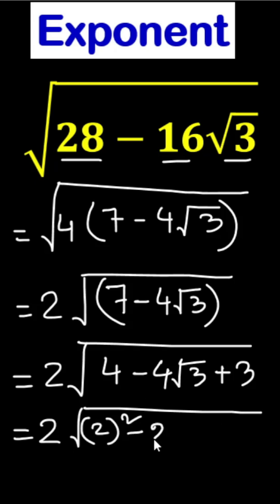Look, it's the a minus b whole square formula: a square minus 2ab plus b square. So here a is 2, and under the root we can write 2 minus root 3, whole square.